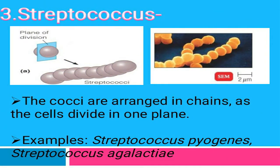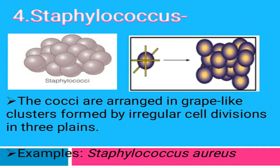The third arrangement is streptococcus. The spherical coccus cell again divides along one plane — X, Y, or Z — and after repeated divisions, it produces many daughter cells that remain joined together in a chain form. This is called streptococcus. Examples are Streptococcus pyogenes and Streptococcus agalactiae.